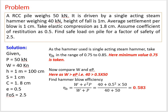Let us now solve a problem to find the capacity of a driven pile using the dynamic method — the Hiley formula. An RSC pile of weight 50 kN is driven by a single acting steam hammer weighing 40 kN. The height of fall is 1 meter, average settlement per blow is 1 cm, elastic compression c is 1.8 cm, coefficient of restitution e is 0.5, and the factor of safety is 2.5. Given: pile weight P = 50 kN, hammer weight W = 40 kN.